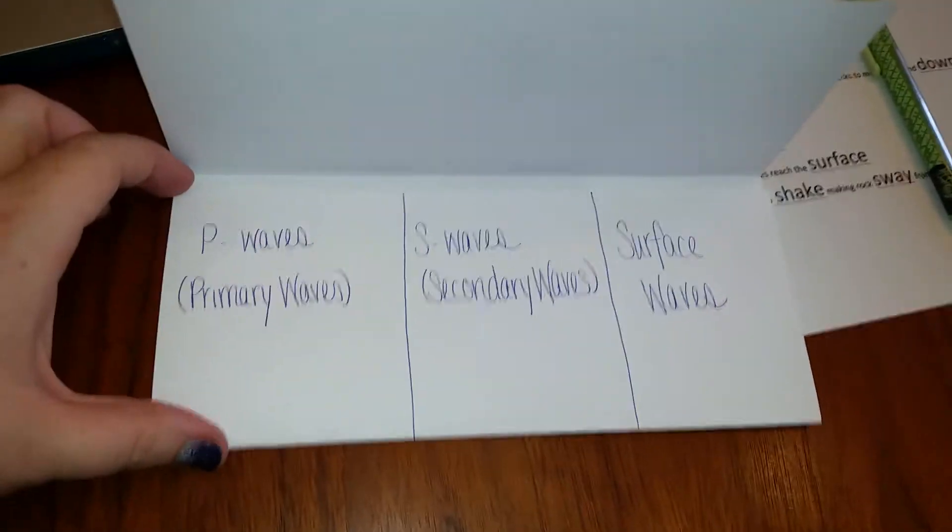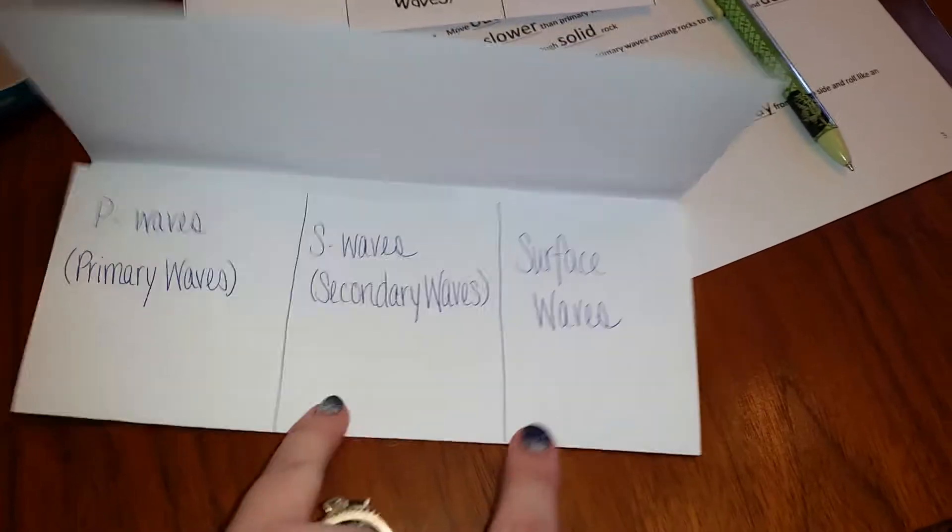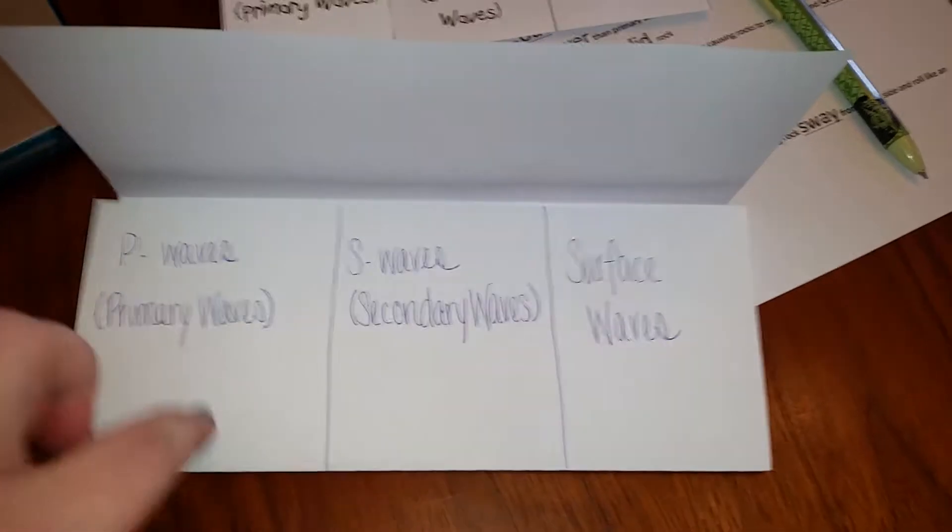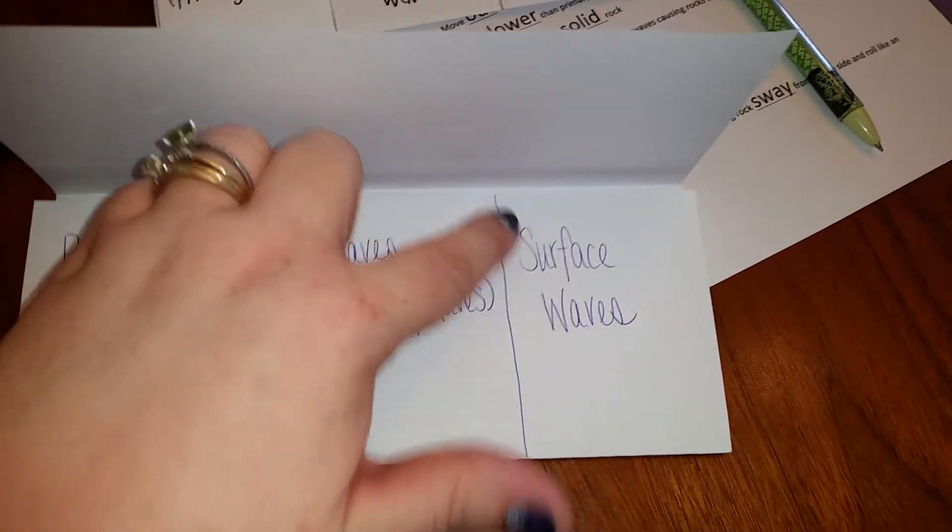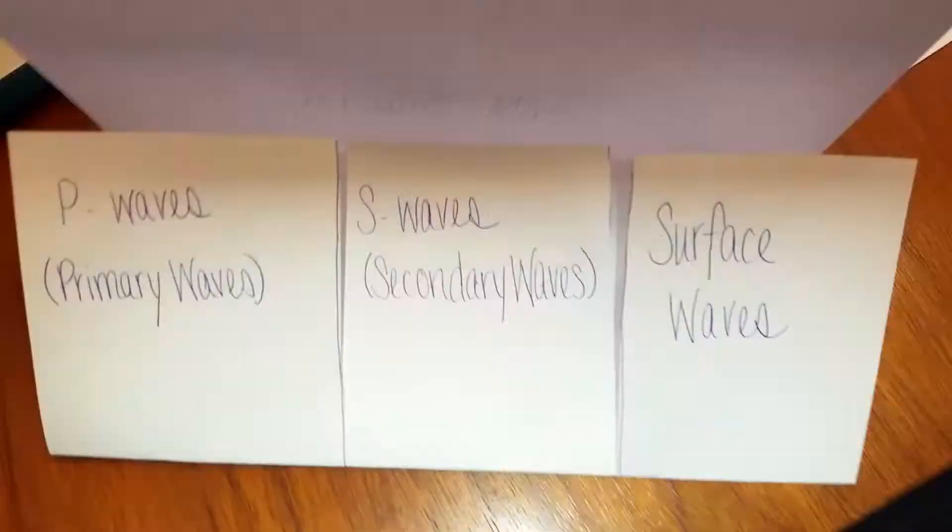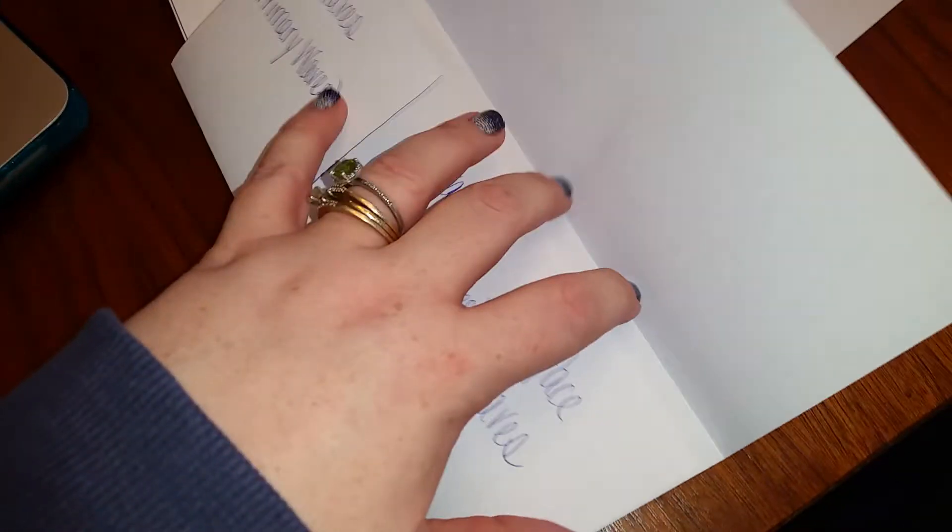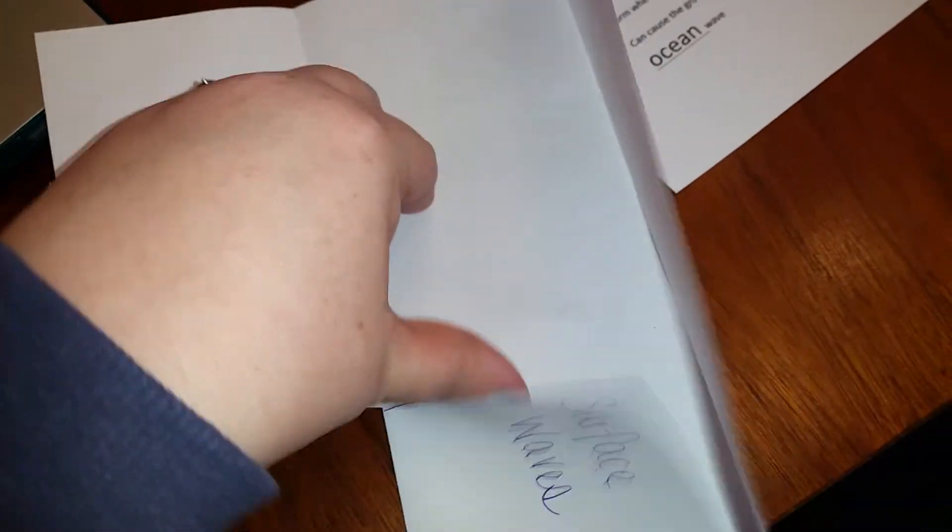Alright, now that I've written my P waves, S waves, surface waves—sorry if you wanted to, you could try to make them a little more even. I would like to but I don't have enough time. So anyway, P waves, S waves, surface waves, I'm going to cut on each line so that each one becomes a separate flap. Okay, each one is now a separate flap.